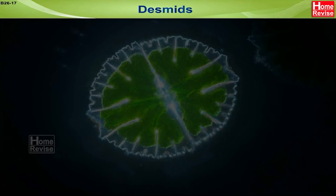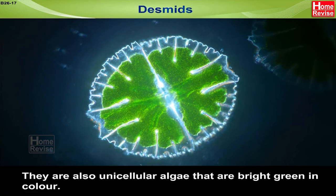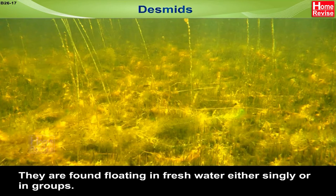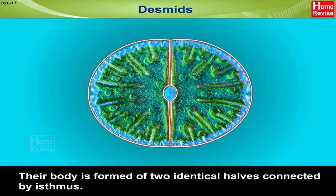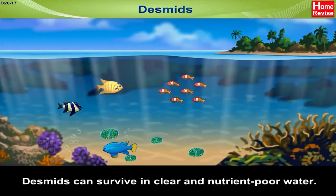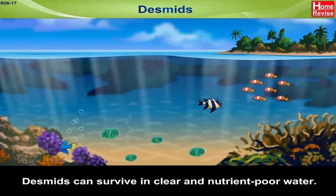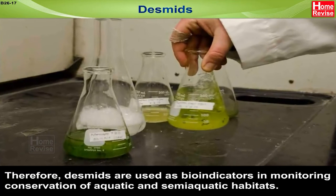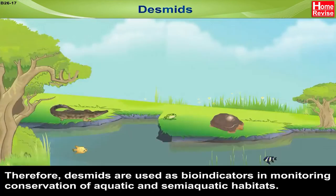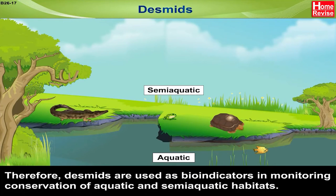Desmids are unicellular algae that are bright green in colour. They are found floating in fresh water either singly or in groups. They occur in a variety of attractive shapes. Their body is formed of two identical halves connected by an isthmus. Desmids can survive in clear and nutrient-poor water but cannot grow in nutrient-rich, polluted water. Therefore, desmids are used as bio-indicators in monitoring conservation of aquatic and semi-aquatic habitats.